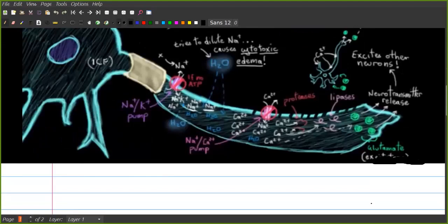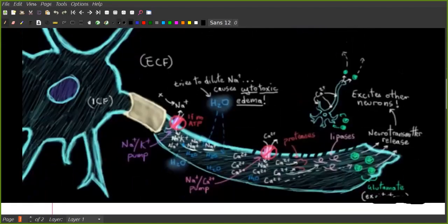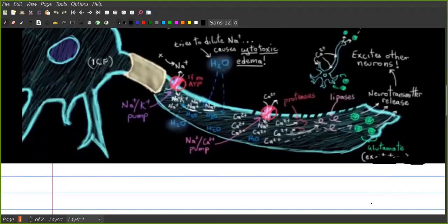This does more glutamate and excites more neurons because there's a lot of calcium. And they also have degradative enzymes such as proteases and lipases, and that's bad. It begins to break the neuron apart.